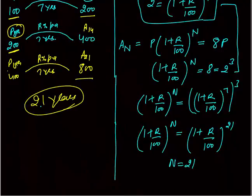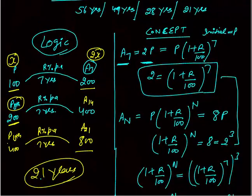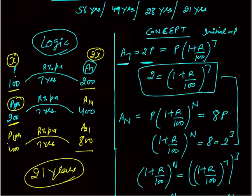You can see that using this logic you can solve the question in less than 30 seconds — you can even do it verbally. Your amount doubles in 7 years: 100 becomes 200, 200 becomes 400, 400 becomes 800 — answer is 21 years. That's how you have to learn, practice, and think about how to solve questions in the least possible time using concept, options, logic, and assumptions.